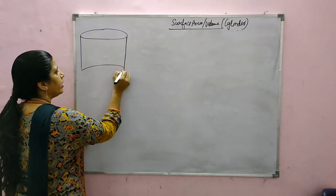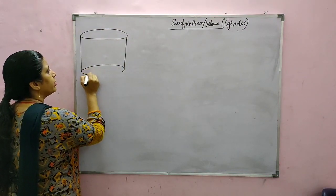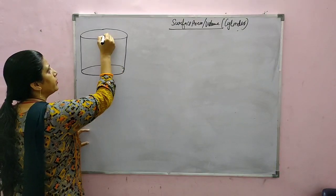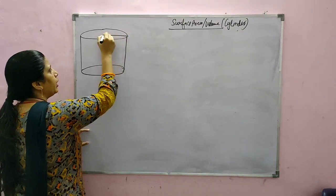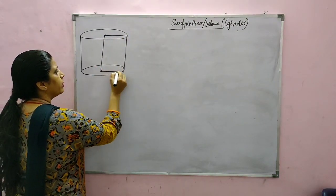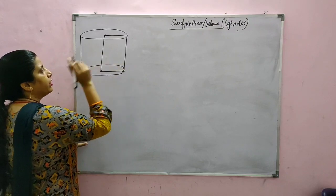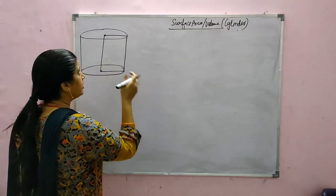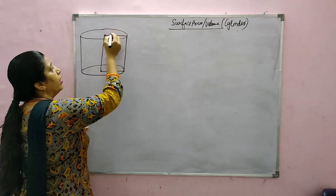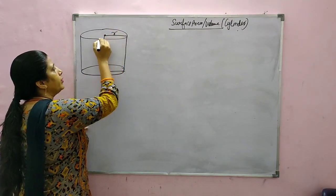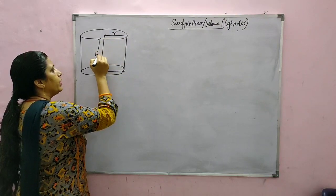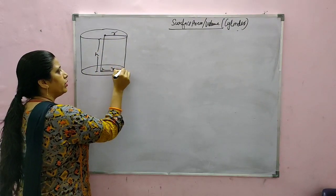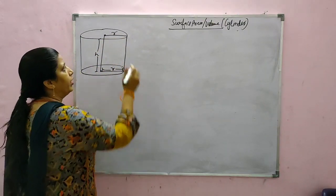In a cylinder, there are two circular parts — upper and lower — like your water glass. The dimensions are R (radius), H (height), and this bottom circle also has radius R.